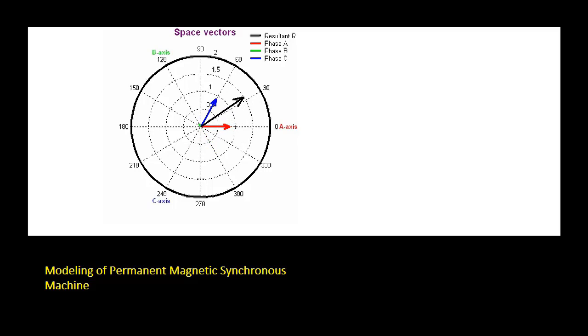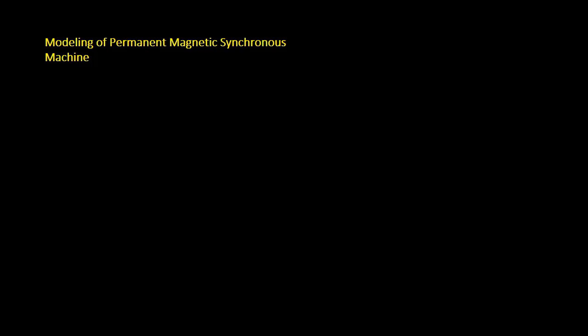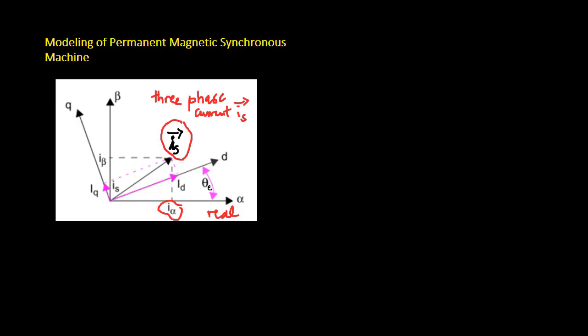The speed of their rotation depends on the frequency omega of the three-phase voltages and currents. In the complex plane, as shown in this figure, each vector could be decomposed into a component on the real axis and a quadrature component on the imaginary axis.